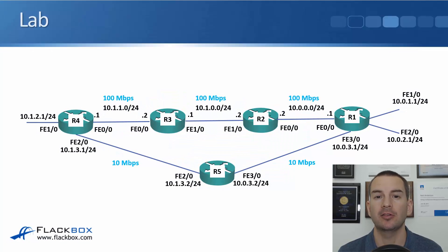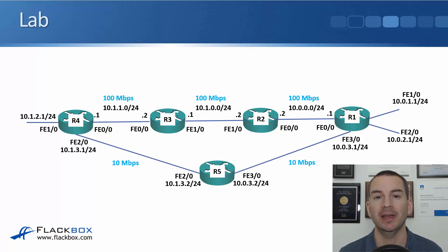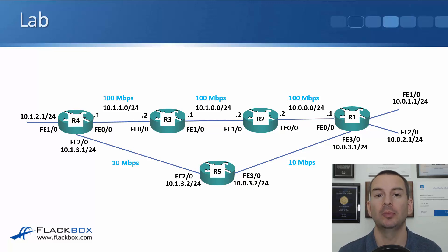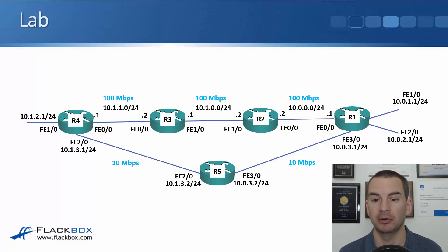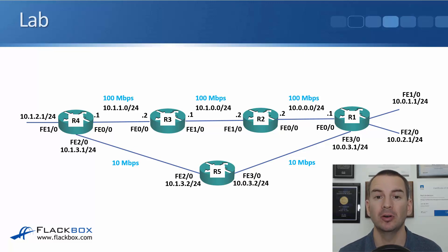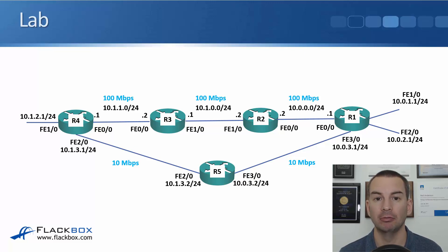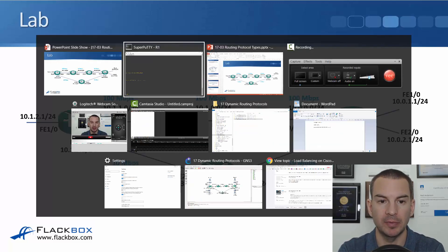This lecture is a lab demo where I'll compare our distance vector and our link state routing protocols. It's the same lab topology we've been using for the last few demos. I've got routers R1 to R5, and this is continuing on from the last demo where we already had RIP set up and configured.